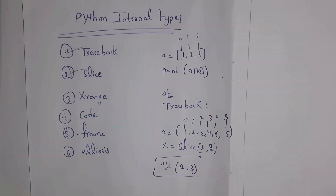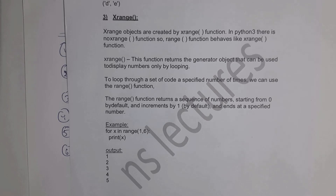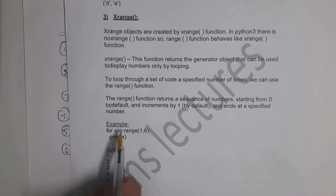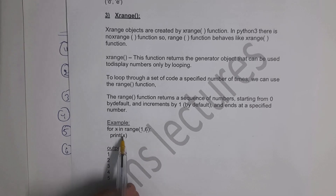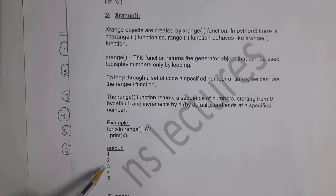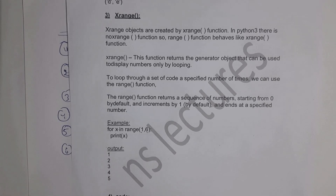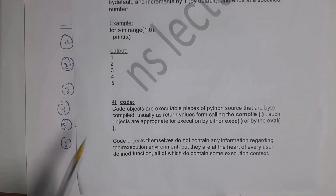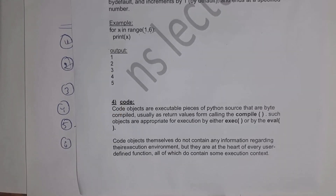Next is xrange. Using xrange you can create xrange objects, but Python 3 does not support xrange — instead we use the range function. For example, for x in range(1, 6): print(x) gives output 1 2 3 4 5. The range function loops through values. If you want to loop a set of code a specific number of times, use range.